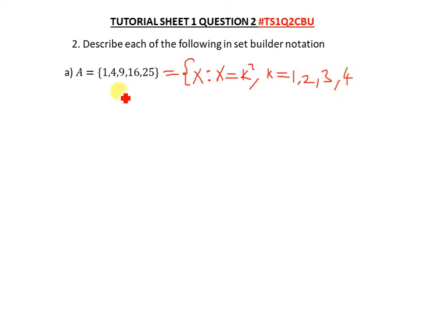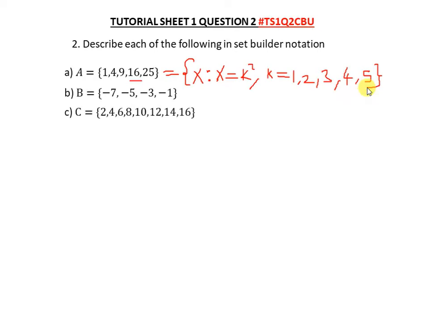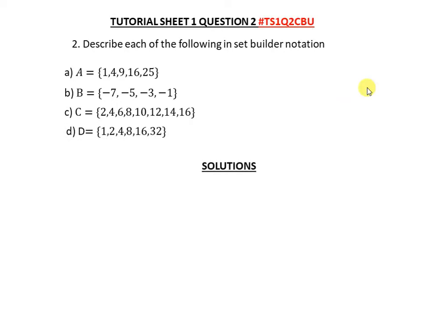4 squared gives 16, and 5 squared gives 25. So referring to the written solution: x is such that x = k², where k = {1, 2, 3, 4, 5}. When you square these values of k, you get that set as your output.